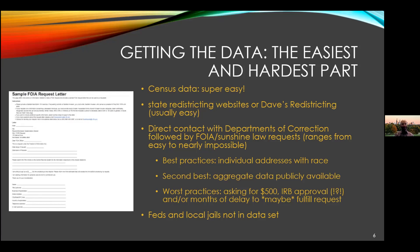Every state's Freedom of Information Act process is different. I recommend — if you have contacts with journalists, your state ACLU, or other good governance bodies — those are great resources for learning how to make a successful FOIA request for your state. If you're interested in doing this process from the ground up, it's important to specify that you want both race and ethnicity data, and to ask for home address as well as committing county. Basically ask for everything you could possibly want — you don't get from a FOIA request what you don't ask for.